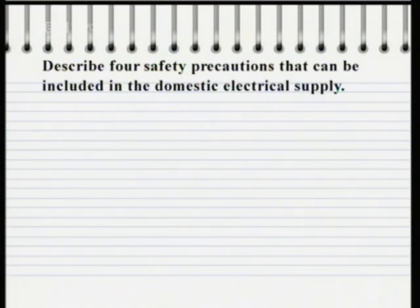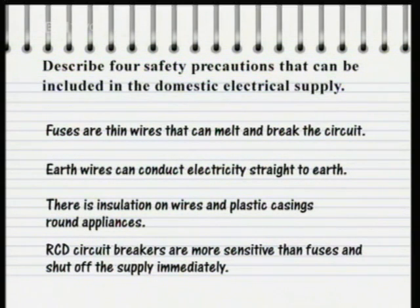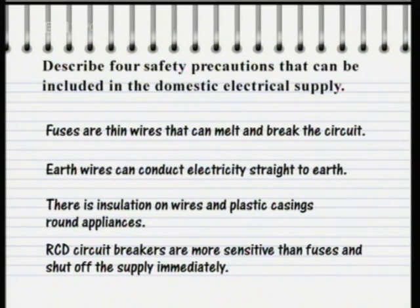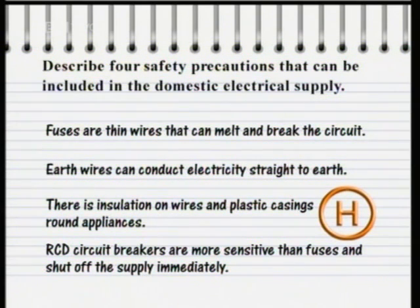Describe four safety features that can be used in domestic mains electricity supplies. The safety features you should have noted are: fuses, which are thin wires that get hot, melt and break the circuit if too much electricity flows through them; earth wires, that conduct electricity straight to earth if there's a fault in the appliance; insulation around the wires and plastic casing around appliances; and RCD circuit breakers, which are more sensitive than fuses and can react immediately to tiny electrical leaks and shut off the supply.